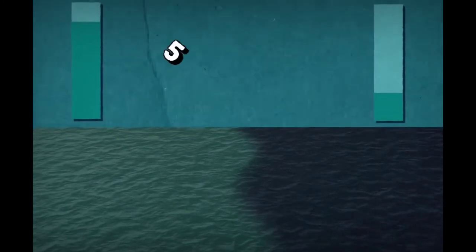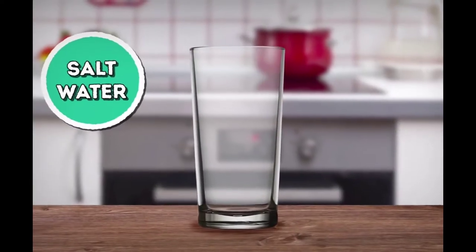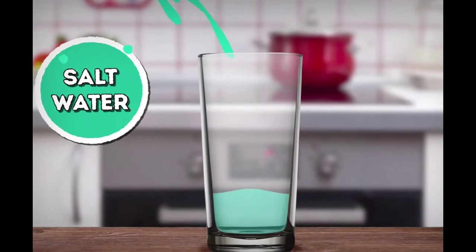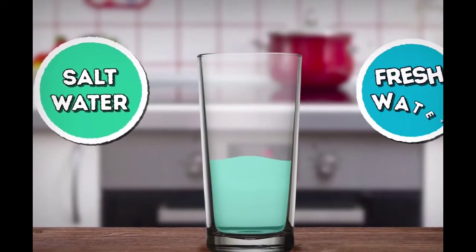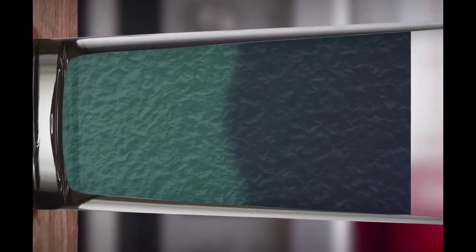Haloclines appear when water in one ocean or sea is at least five times saltier than in the other. You can create a halocline at home if you pour some seawater or colored salty water in a glass, and then add some freshwater on top of it. The only difference is that your halocline will be horizontal, and ocean haloclines are vertical.